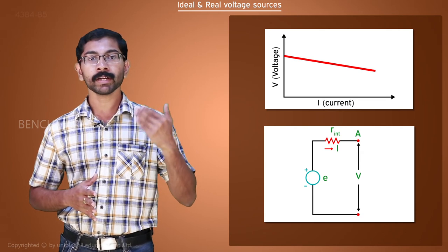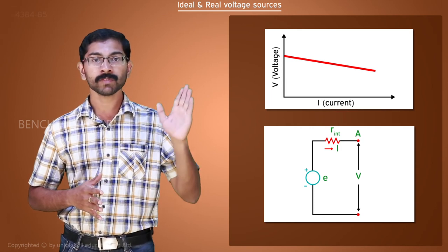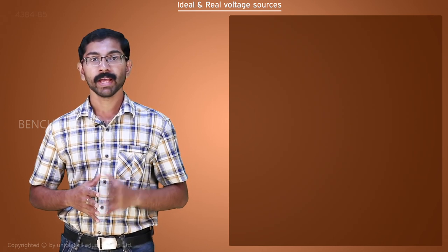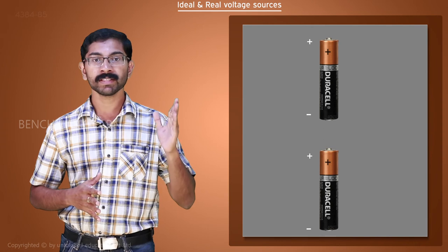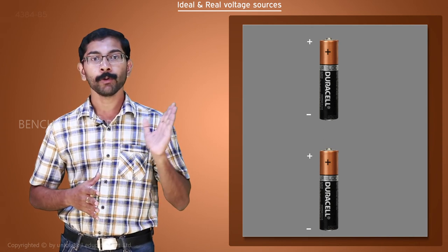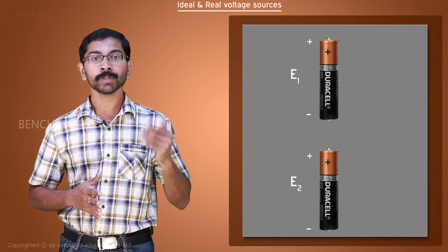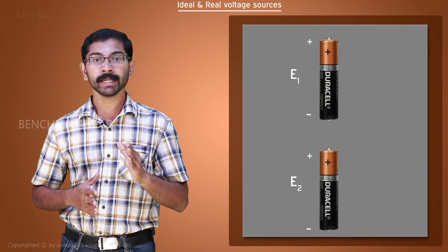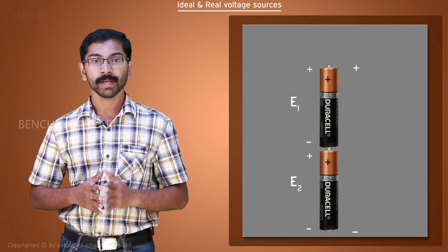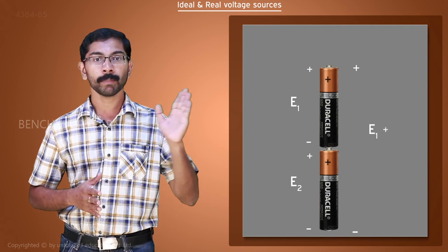When more current is drawn from the source, more voltage drops across the R int and less voltage appears as terminal voltage V. We can connect voltage sources in series to get higher voltage. Here, we have two batteries with EMFs E1 and E2. When the positive terminal of second battery is connected to the negative terminal of the first one, the total voltage across the combination is E1 plus E2.